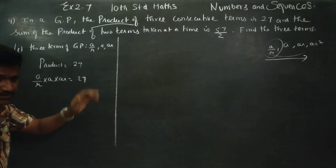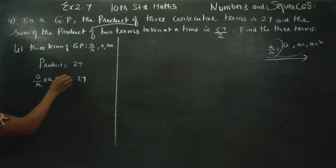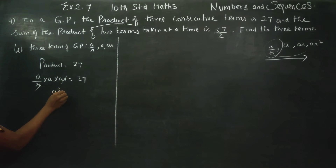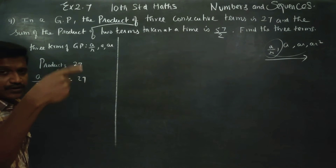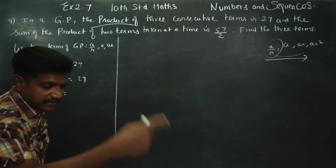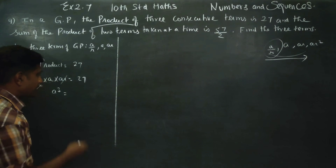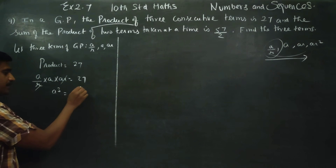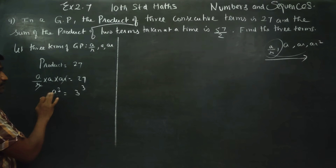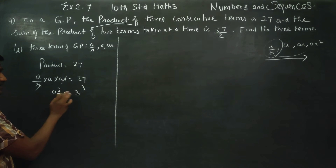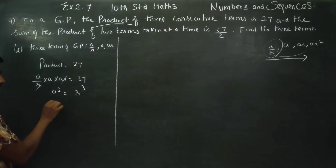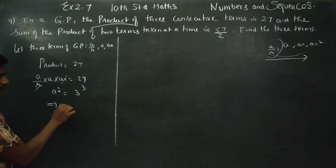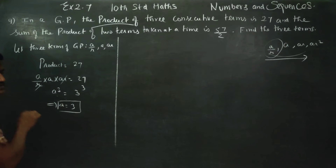R cancels out. A into A into A is A cube. 27 equals 3 into 3 into 3, which is 3 power 3. When bases are the same, powers are the same, so A is equal to 3. First answer is ready.